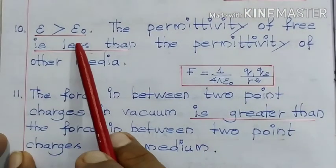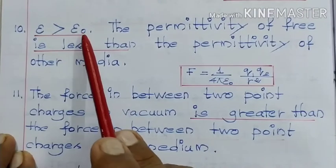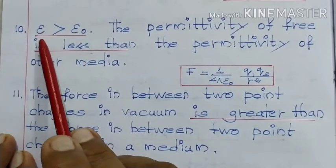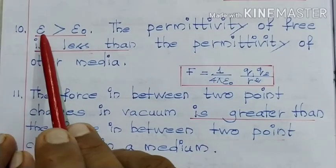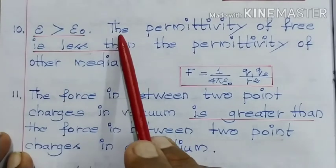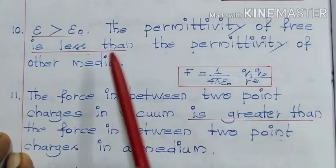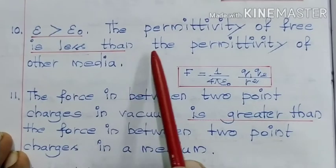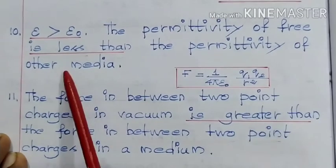ε₀ is nothing but the permittivity of free space, but ε is the permittivity of a medium. So, the permittivity of free space is less than the permittivity of other media.